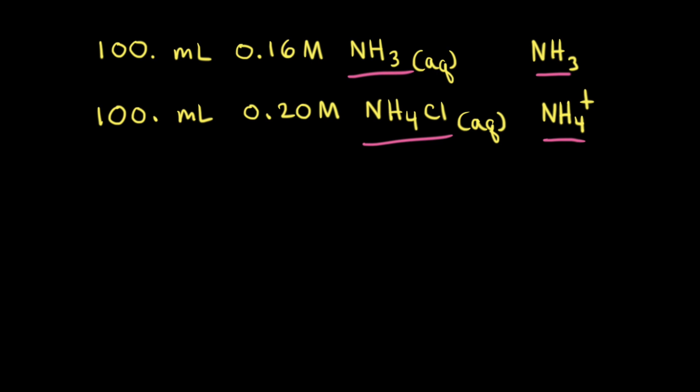I often say that a buffer solution consists of a weak acid and its conjugate base, but in this case, the buffer consists of a weak base and its conjugate acid. So a more general definition for a buffer solution is a weak conjugate acid-base pair.